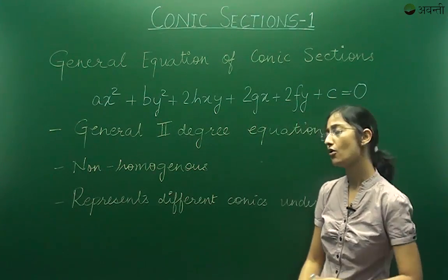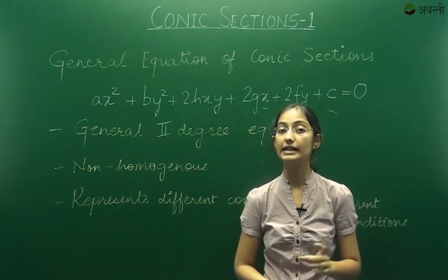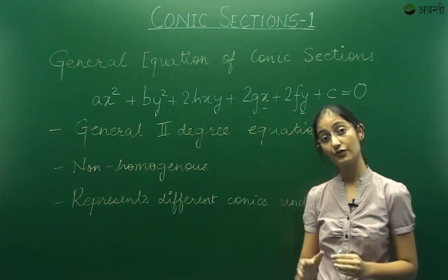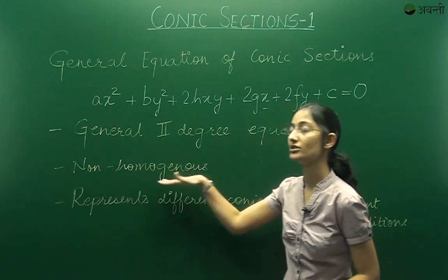You can see that I also have terms of x, y and a constant term over here which all have a degree less than 2. Now since we have terms that have degree less than 2, we will call this a non-homogeneous equation.